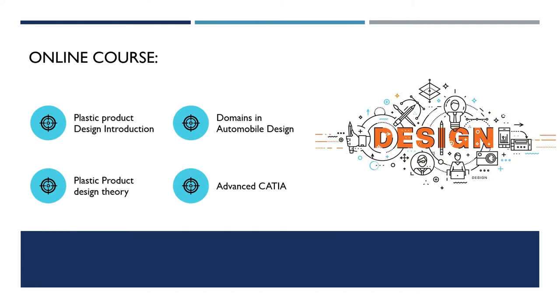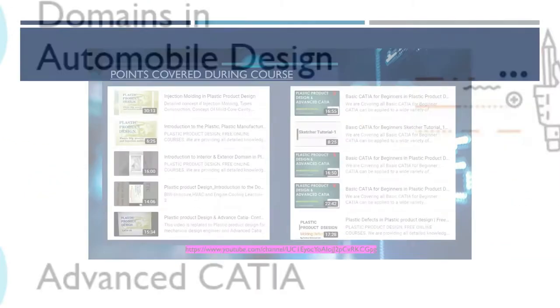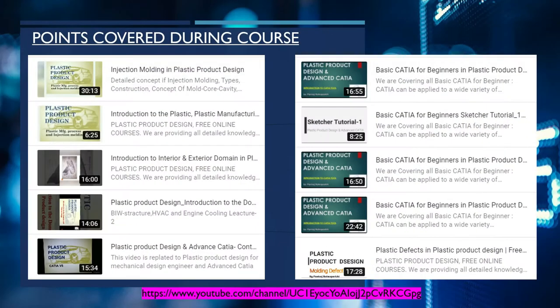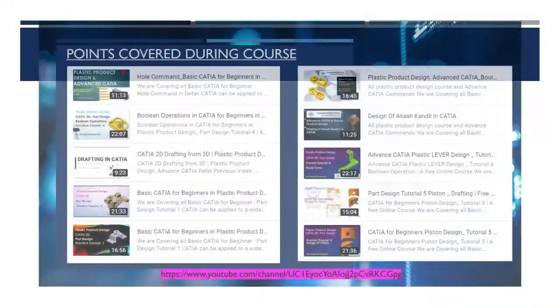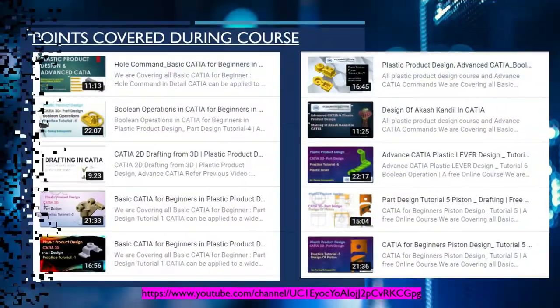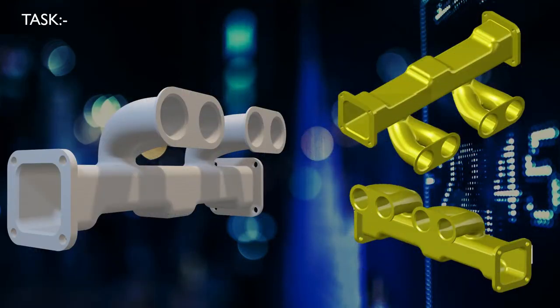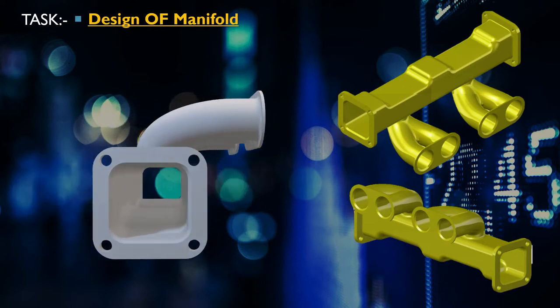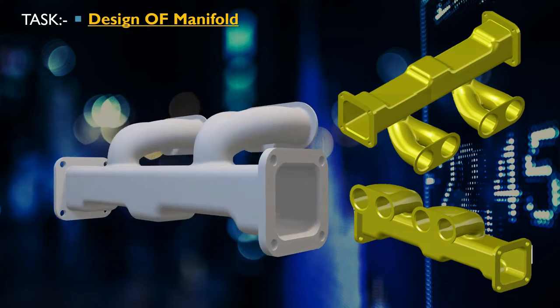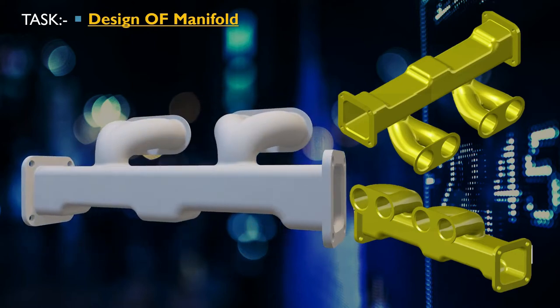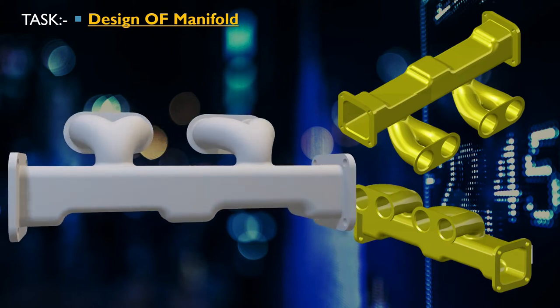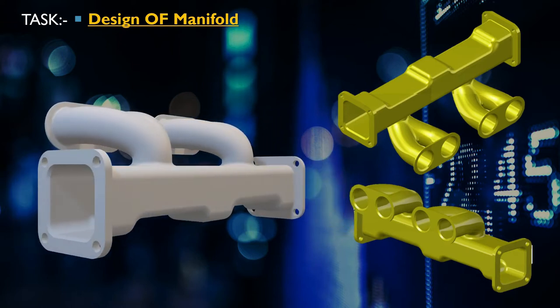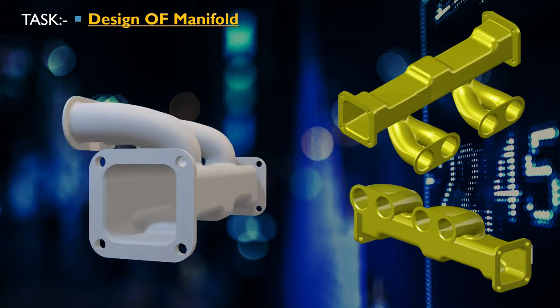These are the online course contents and we are at Advanced CATIA. Points already covered during the course have videos available on the YouTube channel. Without wasting time, let's start the design of a manifold. The manifold is an engine device used in automobiles to direct air, just like a duct. Let's open CATIA and start the design.